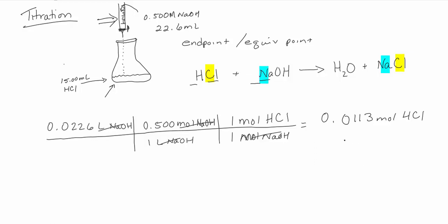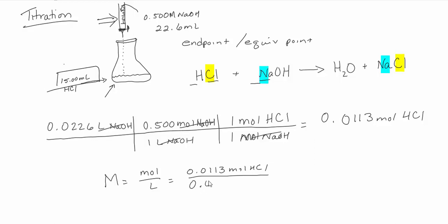Now I can find the original molarity. Molarity equals moles over liters. I have 0.0113 moles and the volume of HCl given initially was a 15 milliliter aliquot, which converts to 0.015 liters. Dividing gives 0.753. Checking sig figs: I have three significant digits, so I finish with three significant digits. The answer is 0.753 molar HCl — that was the concentration we started with.